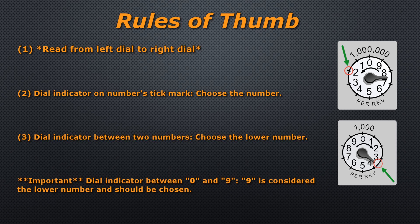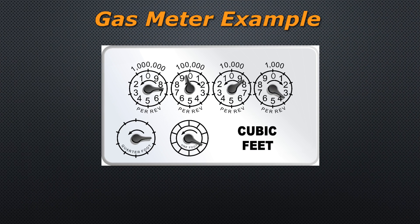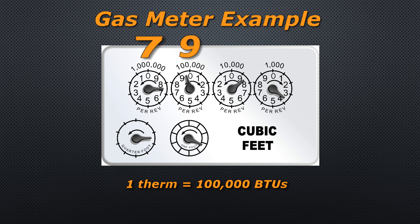One exception to this rule is if the indicator is between 0 and 9 — 9 is always considered the lower of the two numbers. The unit of measure generally used in the United States is the therm. One therm is equal to 100,000 BTUs.